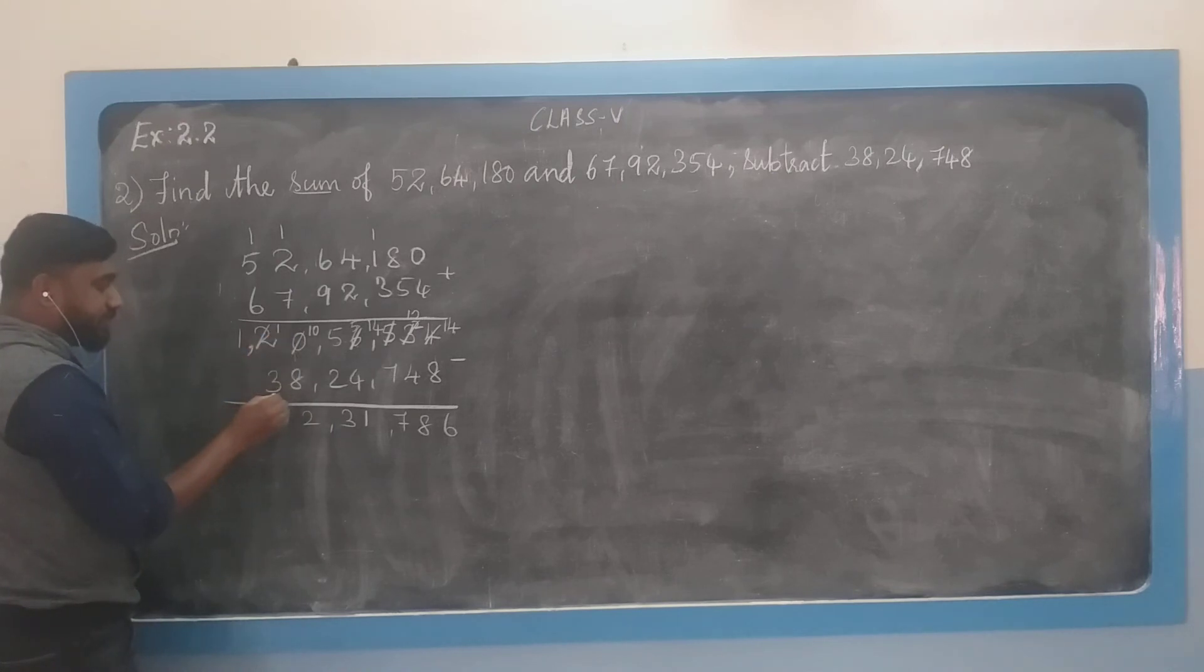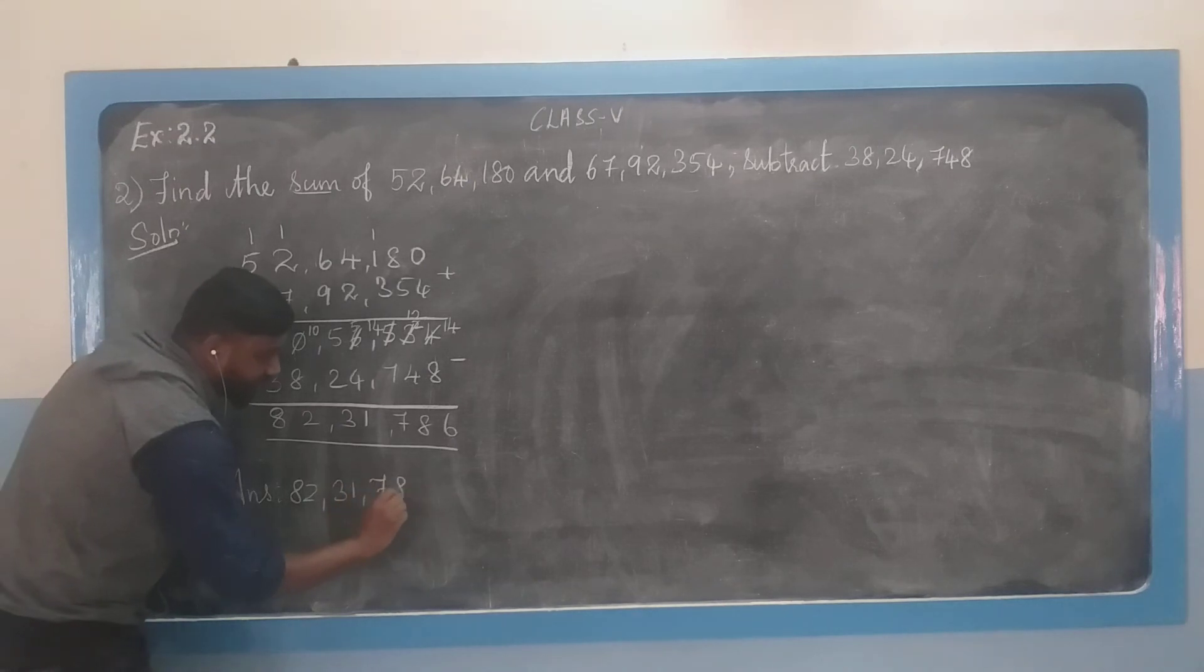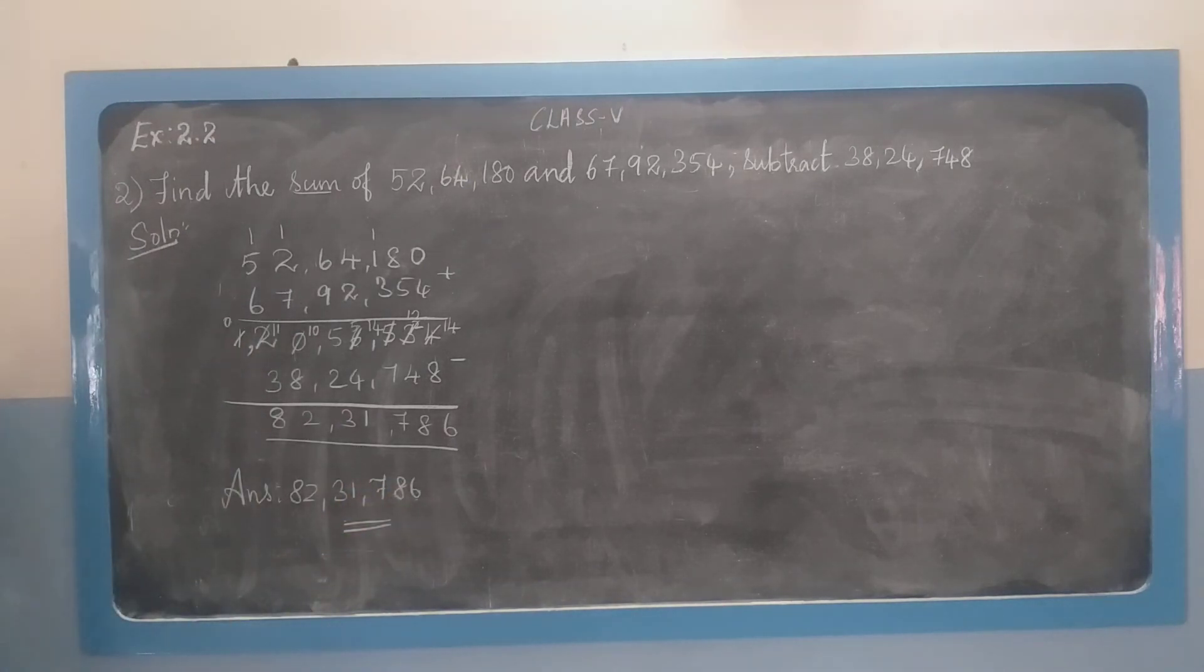1 minus 3 is not possible, so we will borrow. 1 will become 0 here and here it becomes 11. What is 11 minus 3? It is 8. Now your final answer is 8,231,786. So this is our best way to present you.